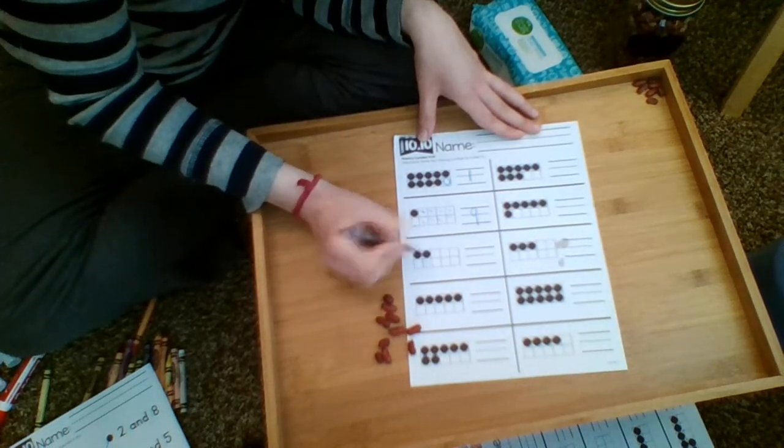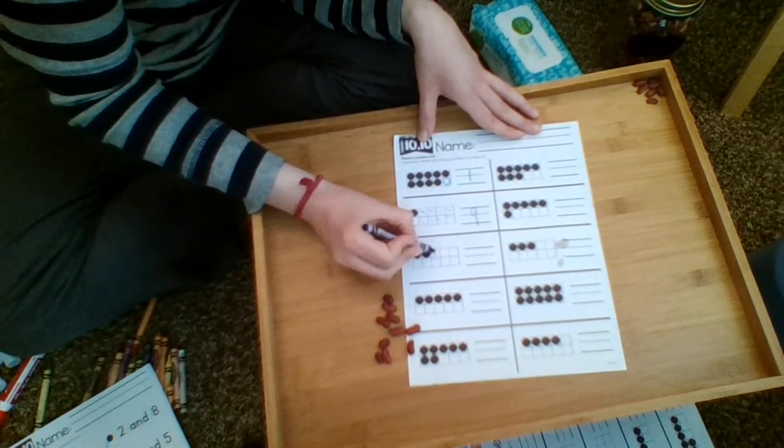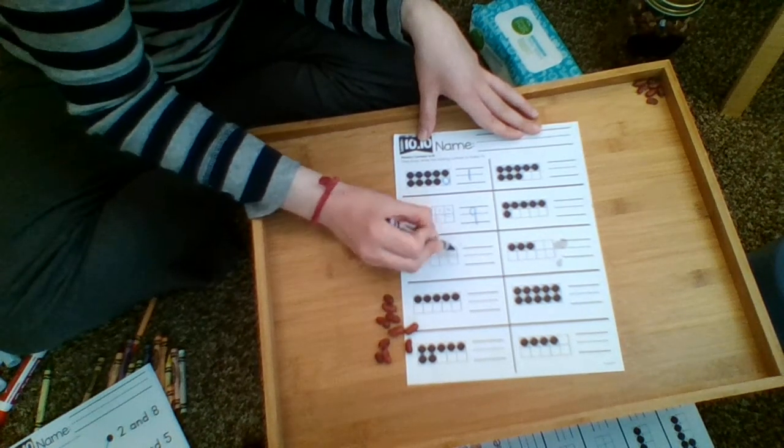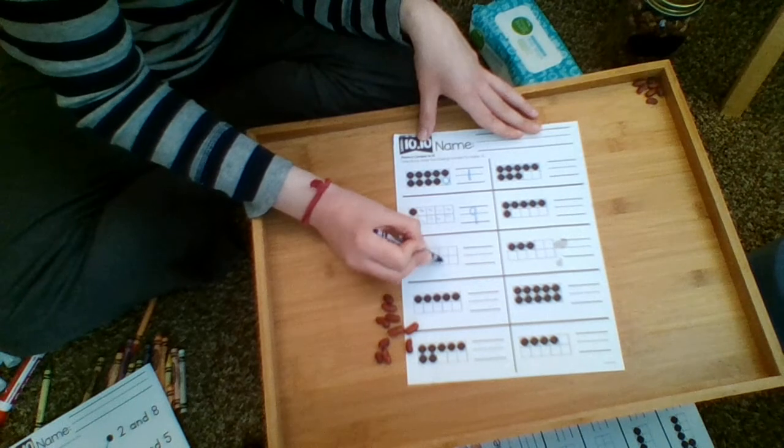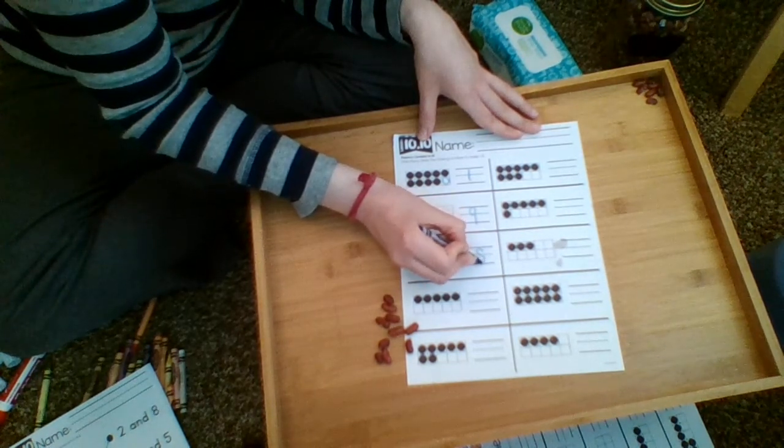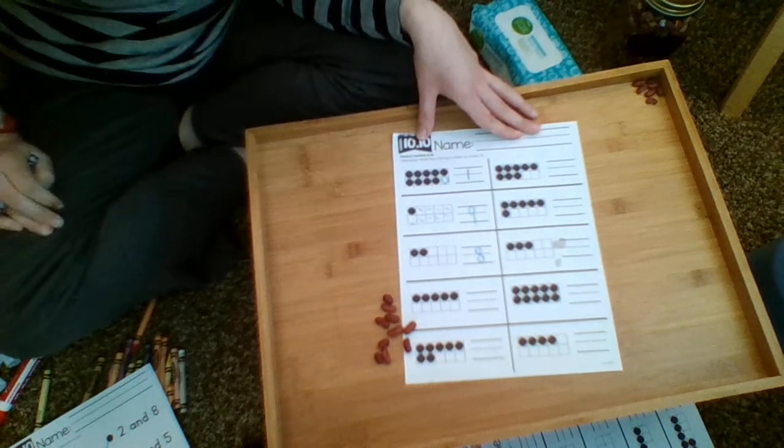Here they gave me one, two. I'm going to count the rest to figure it out: one, two, three, four, five, six, seven, eight. Two and eight make ten.